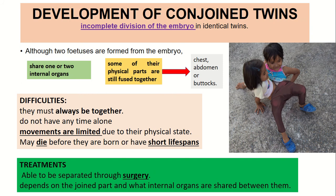Next is the development of conjoined twins, also called Siamese twins. This actually comes from identical twins, but unfortunately the division of cells is incomplete during the embryo stage. As a result, the fetuses share one or two internal organs, or share some physical parts such as the abdomen, chest, or buttocks.